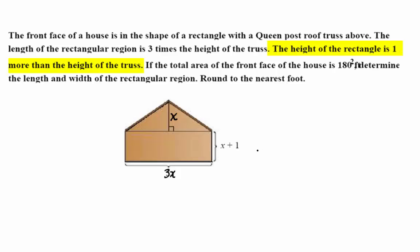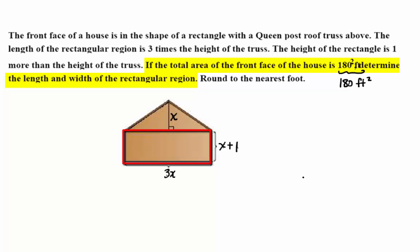The height of the rectangle is one more than the height of the truss. So they labeled that x plus one. If the total area of the front face of the house is 180 square feet, determine the length and width of the rectangular region to the nearest foot.